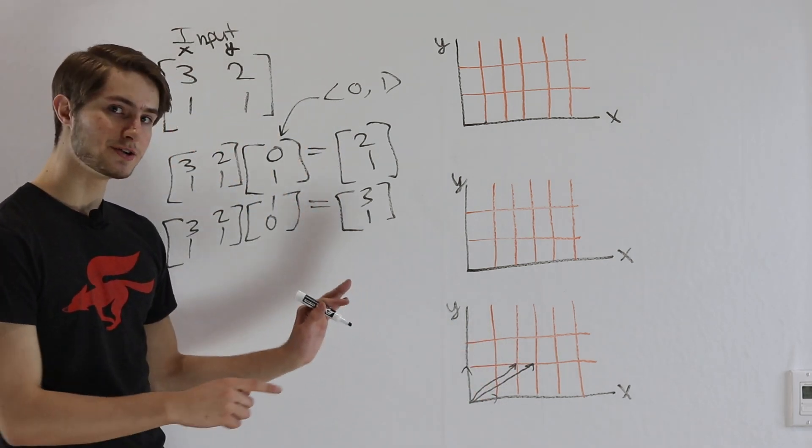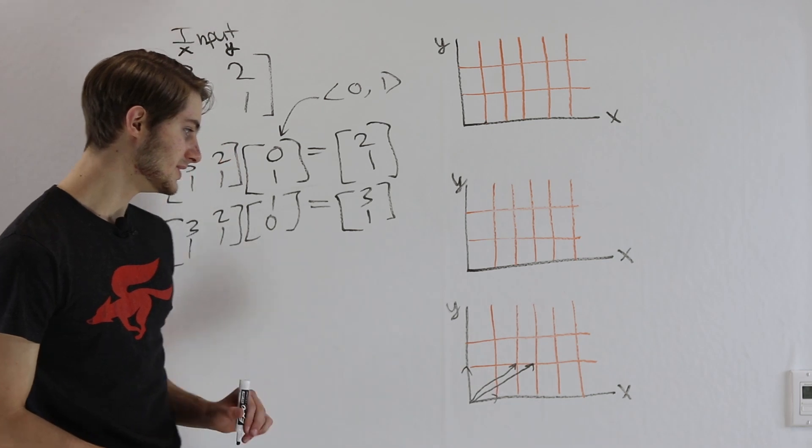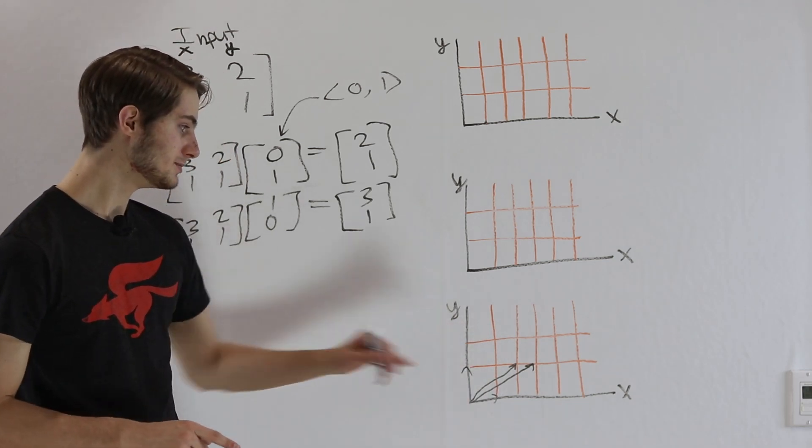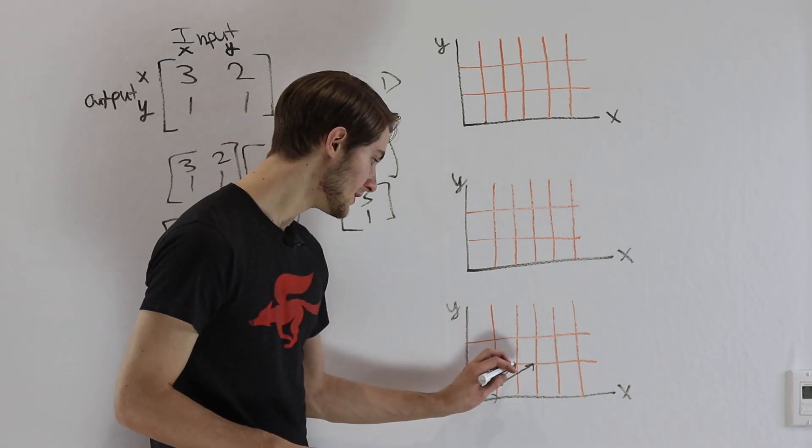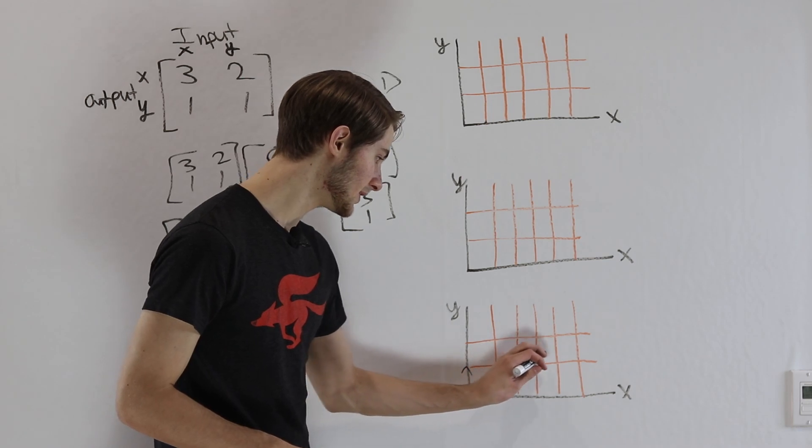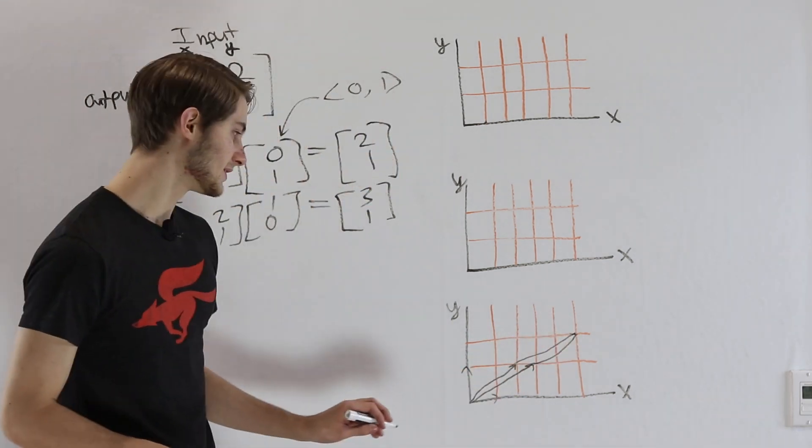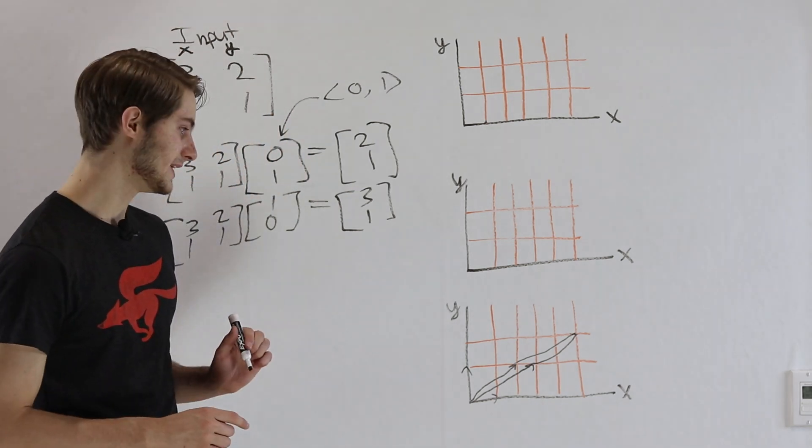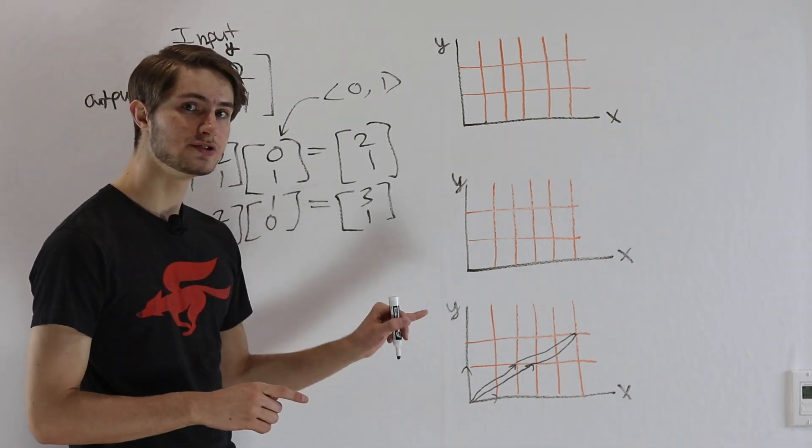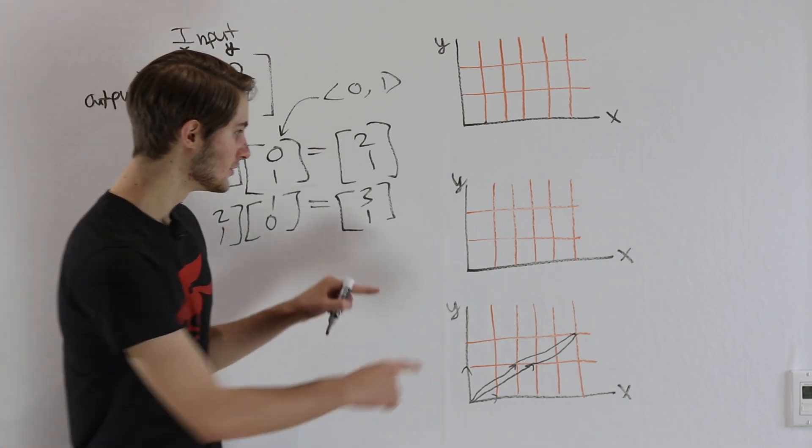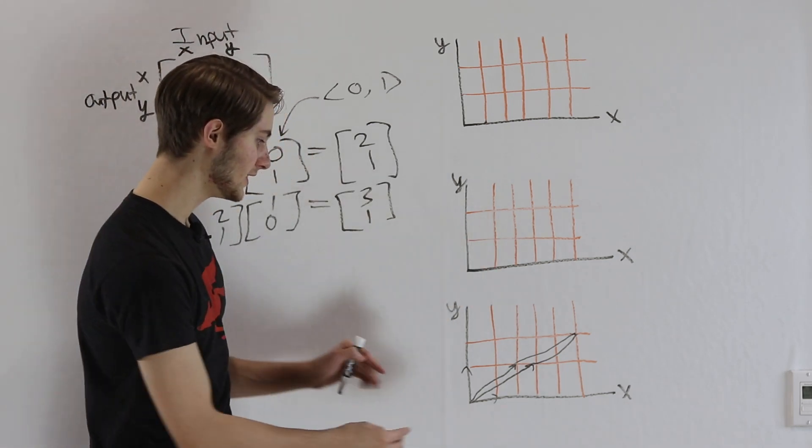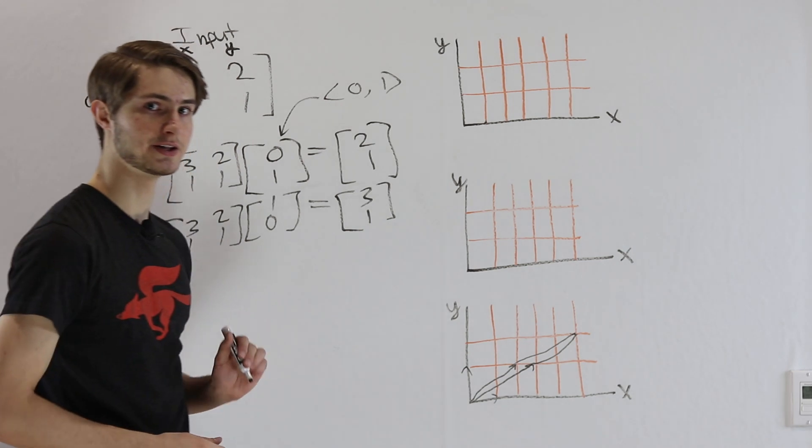Now if we want to think about space in terms of what we're seeing here, it's no longer going to be a square like it was before, but instead it's going to be a parallelogram. So we see our parallelogram looks something like this, and one question we might have is how much has space been stretched from our original 1 by 1 square into this skinny parallelogram?